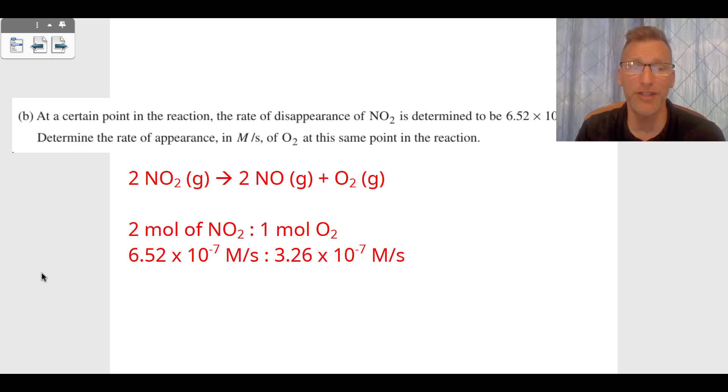It's a two-to-one ratio, which means if you have 6.52 times 10 to the negative 7 molar per second of NO₂ disappearance, you're going to have half as much: 3.26 times 10 to the negative 7 molar per second rate of appearance of O₂. That's going to be worth your second point.